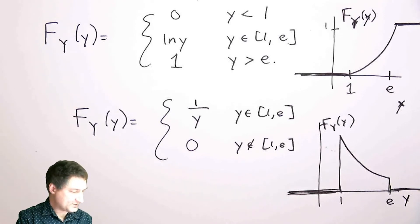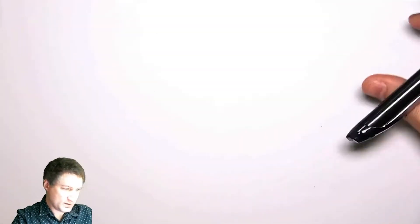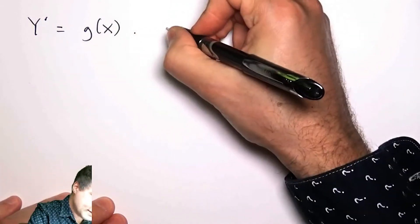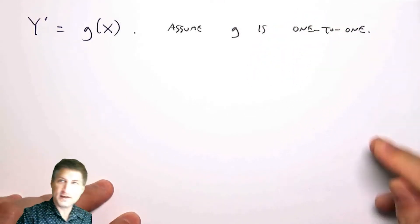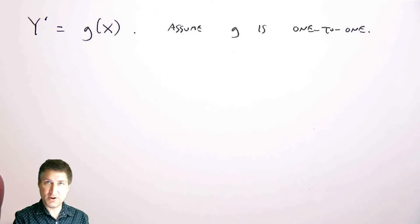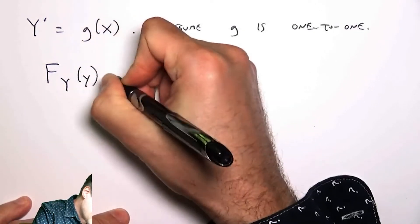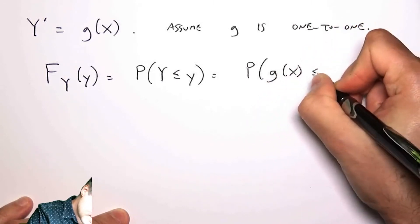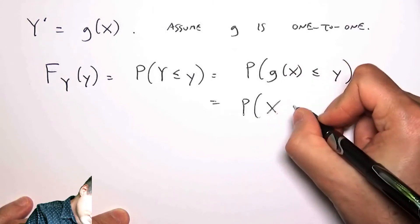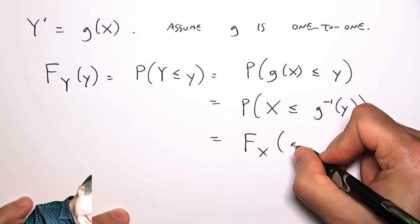Let me be more general about the process. Say Y = g(X), and assume g is invertible or one-to-one, meaning for every value of X there is only one value of Y. Then the CDF of Y is the probability that g(X) < y, and since g is one-to-one I can take the inverse, giving the CDF of X evaluated at g⁻¹(y).